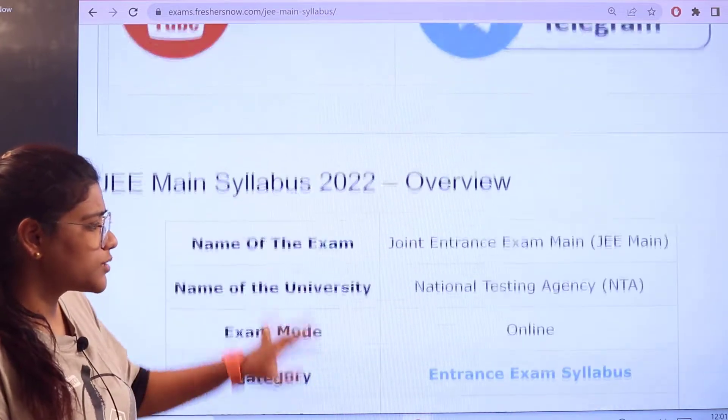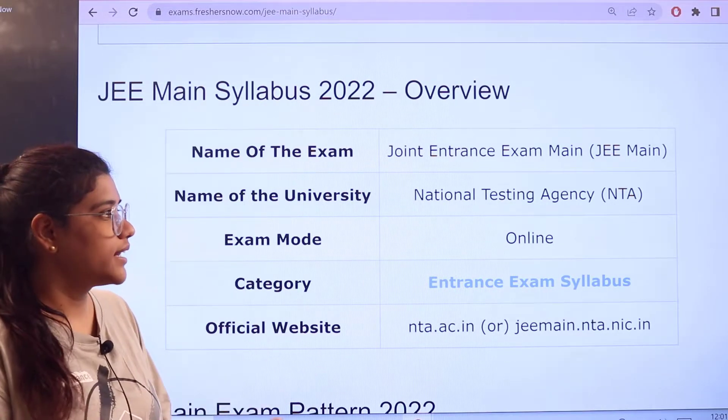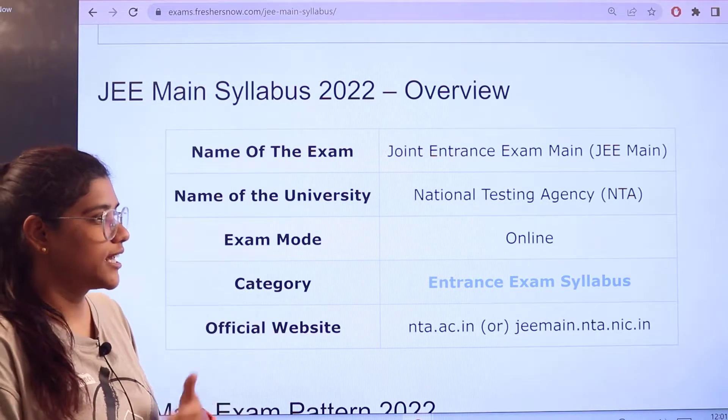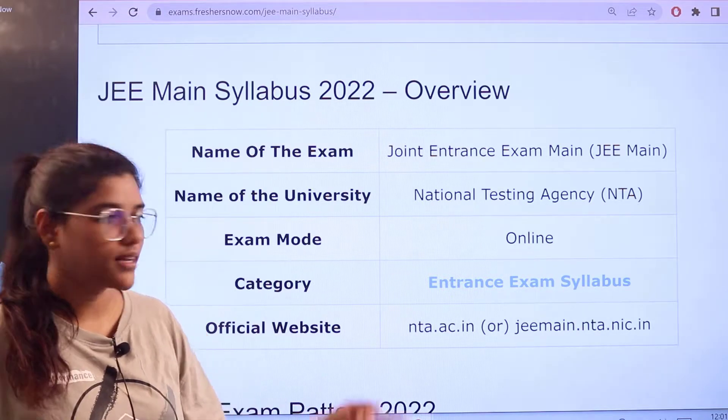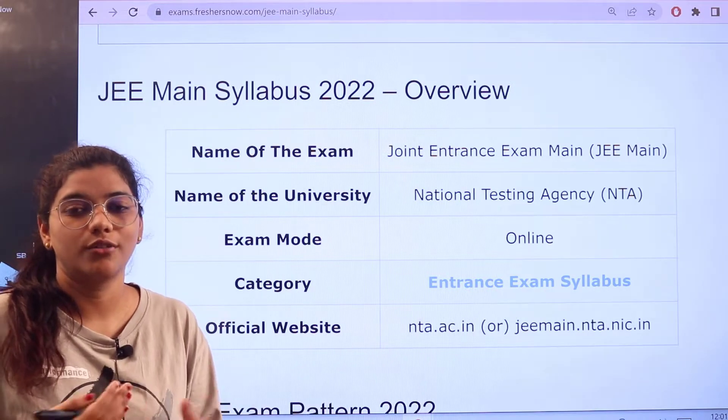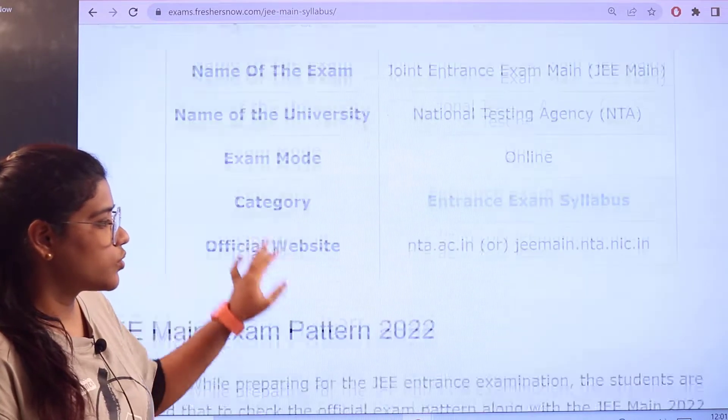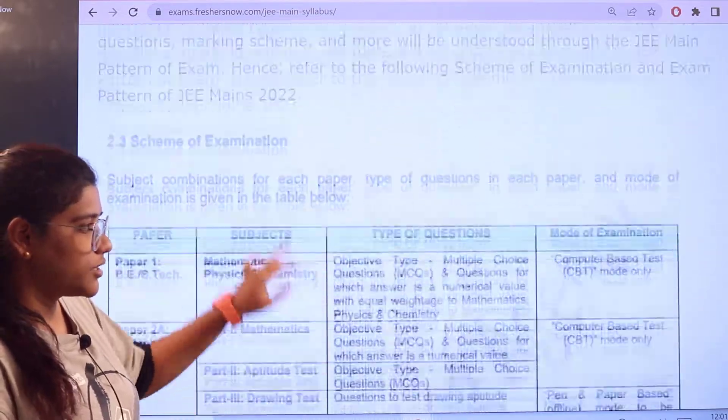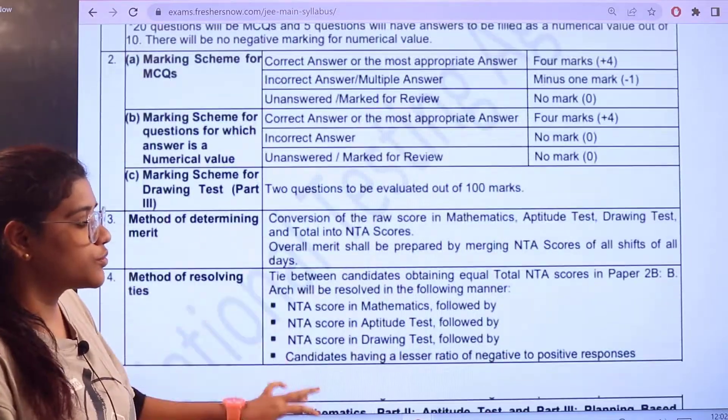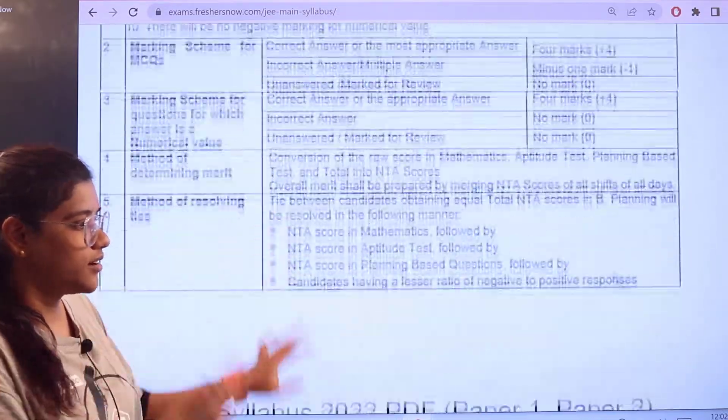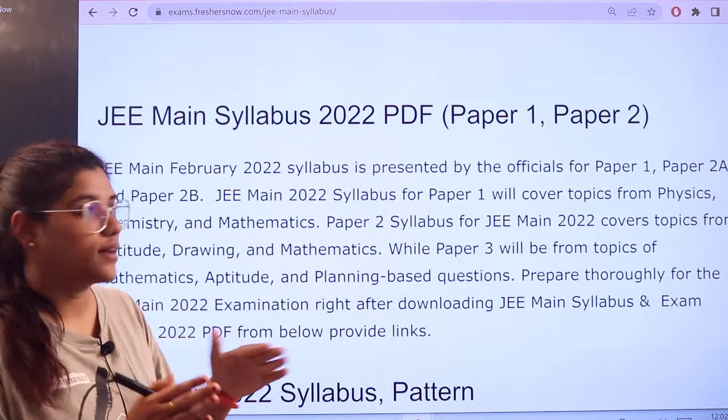So as we come over to this page, you can see the examination is Joint Entrance Examination Main and it is by National Testing Agency. The examination is conducted online. The access to the official websites are also given here in case if you want to check out the latest information or any of the updates you can please head over. So regarding the examination and pattern, everything is given here. So we are going to head over to the actual notification or the actual page where all of this is aligned into one space.